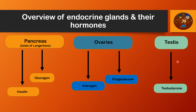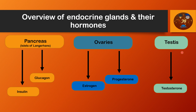The last reproductive organ is the testis, which releases testosterone. Testosterone stimulates the growth of the male sex organs and promotes development of male secondary sex characteristics. So the ovaries and testes are reproductive organs, and the hormones from them help in the reproductive activity of males and females.